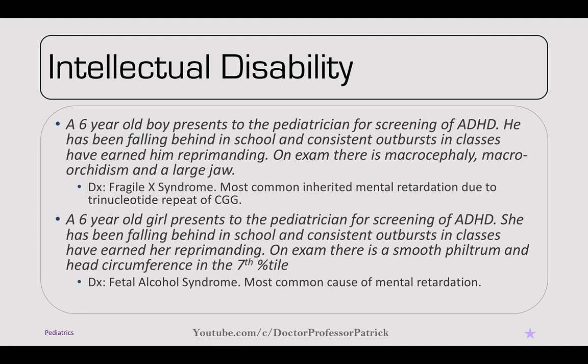Starting with intellectual disability, we have a case of a six-year-old boy who presents to the pediatrician for screening of ADHD. He's been falling behind in school and has consistent outbursts in class. On exam, there's macrocephaly, macro-orchidism, and a large jaw — typical phenotypic characteristics of fragile X syndrome. It's the most common inherited mental retardation due to a trinucleotide repeat of CGG on chromosome X. It's more common in boys than girls, so look for that in a case vignette.